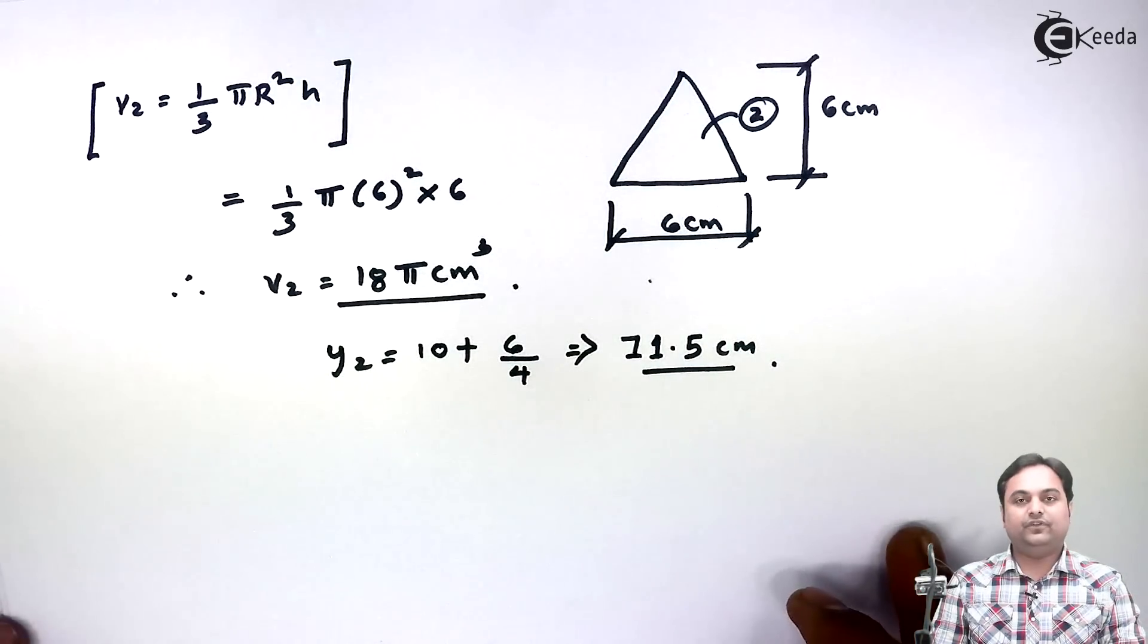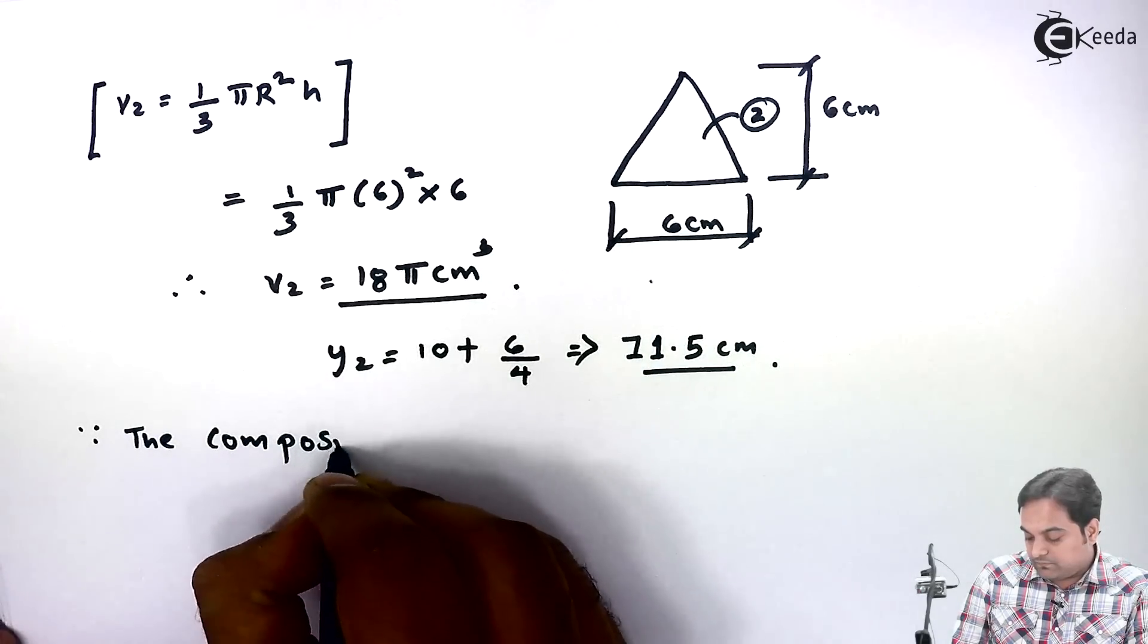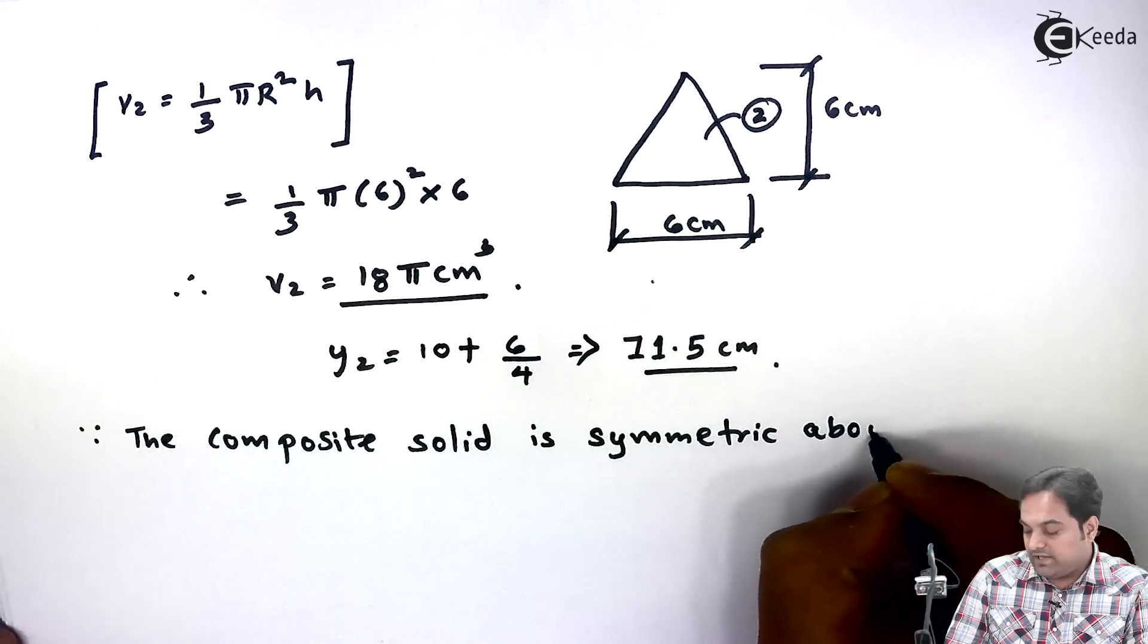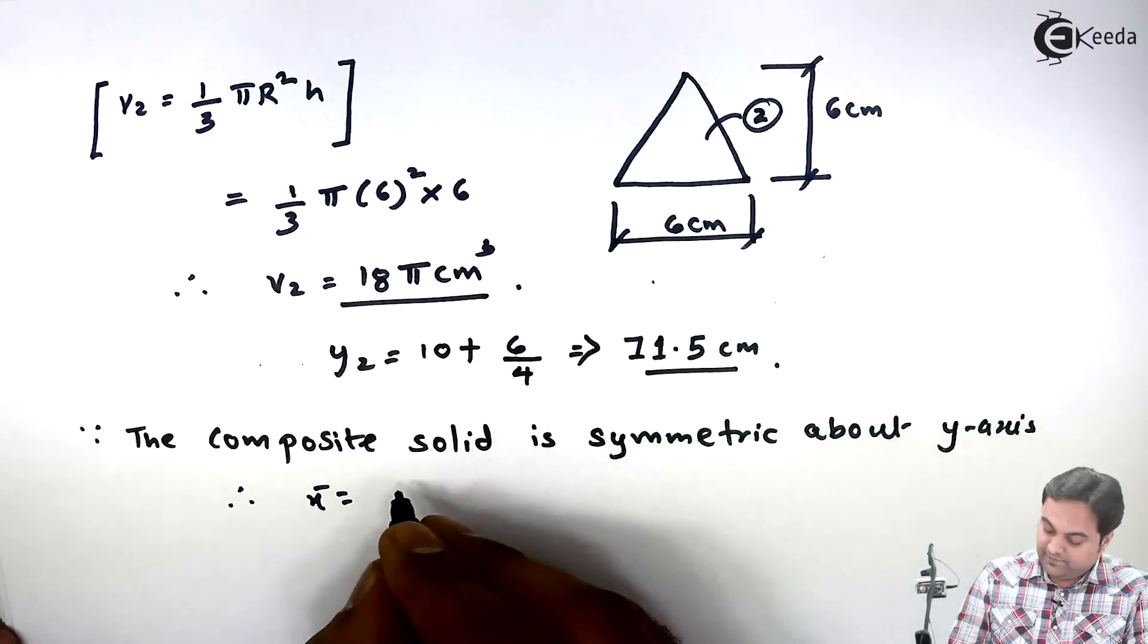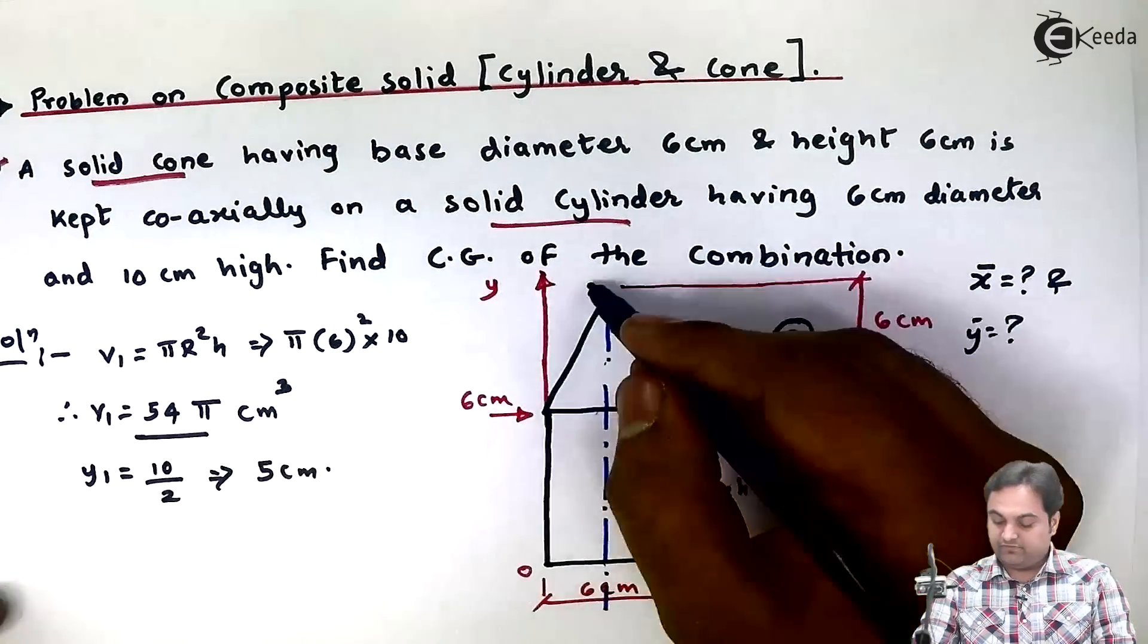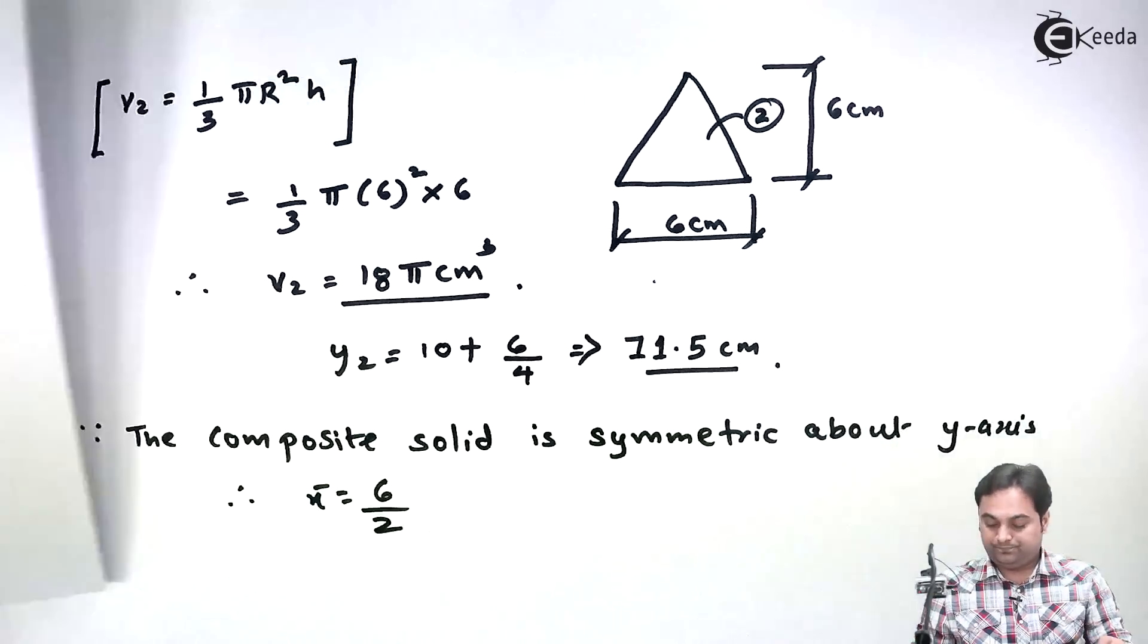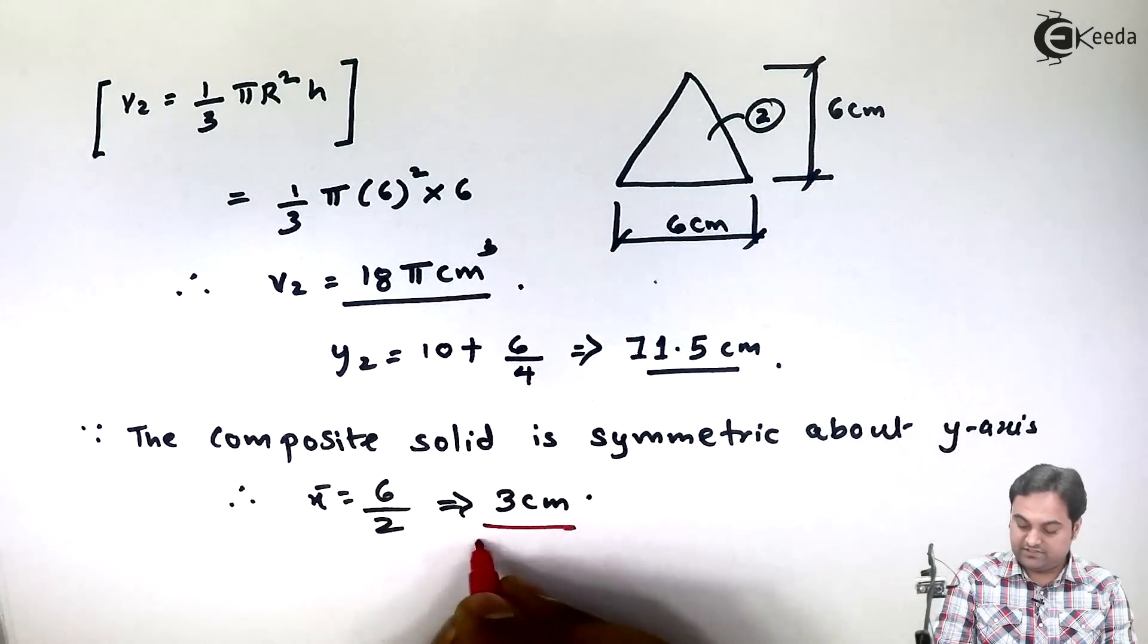After getting these values we can say that since the composite solid is symmetric about Y axis, therefore X bar will be equal to 6 by 2. That is the location of Y axis for this composite solid. So it is 6 by 2, that comes out to be 3 centimeters. So this is the first answer for us.